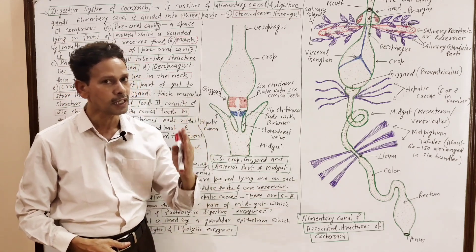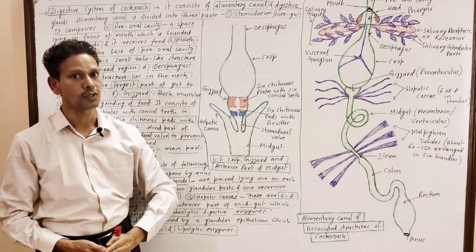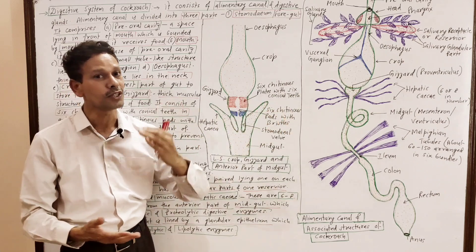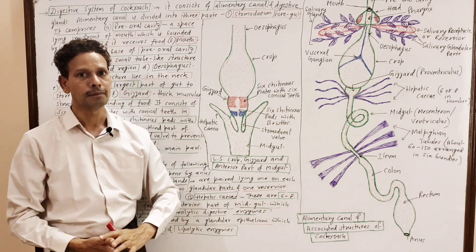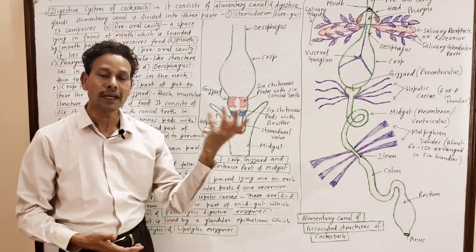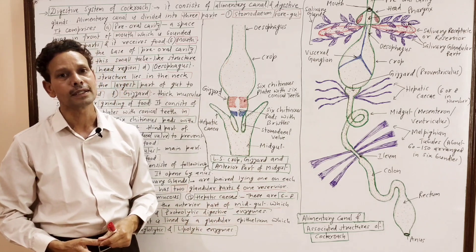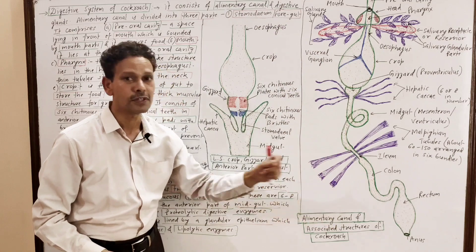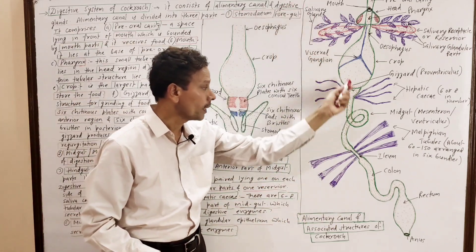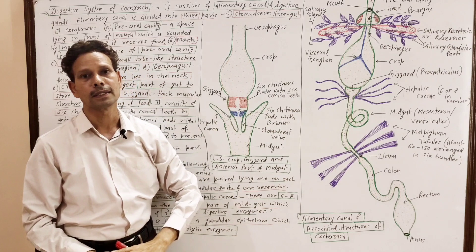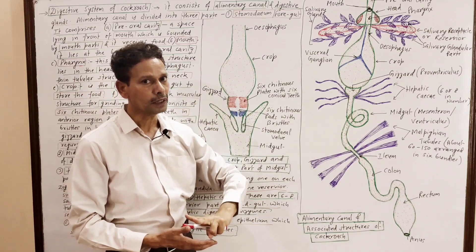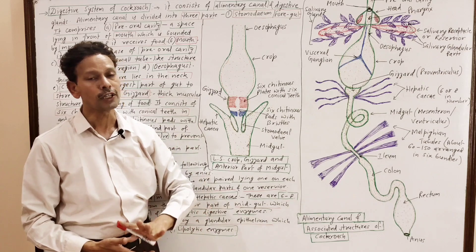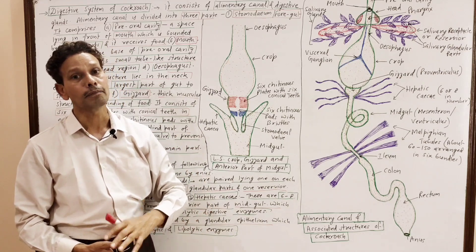Today we will discuss the digestive system of cockroach Periplaneta americana. This digestive system is divided into two parts: the alimentary canal and digestive glands. The alimentary canal of cockroach is complete and is divided into three parts — foregut (stomodeum), midgut (mesenteron), and hindgut (proctodeum).